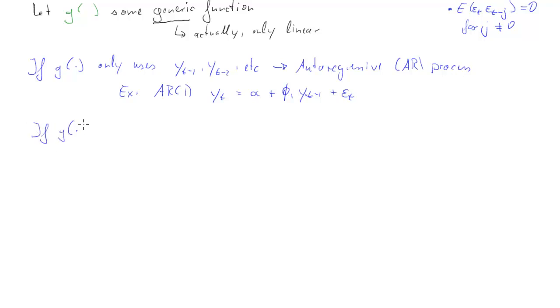If that function g, however, only uses lagged values of the error term, the random term, then we call this a moving average process. And let me state an example here. We'll use as an example an MA2 process. And here it is.